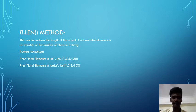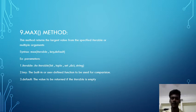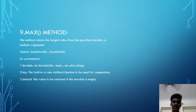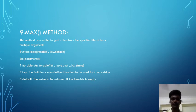The ninth one is max() method, which means maximum. This method returns the largest value from the specified iterable or from multiple arguments. The syntax is max(iterable, key, default). Parameters: iterable can be a list, tuple, set, dict, or string; key is a built-in or user-defined function used for comparison; and default is the value to be returned if the iterable is empty.